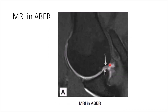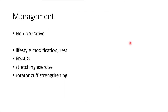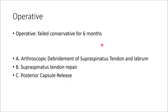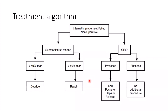Management: non-operative treatment includes activity modification, NSAIDs, and stretching exercises for the posterior capsule, plus rotator cuff strengthening. Operative treatment is indicated when conservative management fails after six months. Surgical options include arthroscopic debridement of the supraspinatus tendon and labrum, supraspinatus tendon repair, and posterior capsule release. The treatment algorithm: if the supraspinatus tendon tear is less than 50%, debridement alone may be performed; if more than 50%, repair is required. If internal rotation deficit is present, add posterior capsule release; if no internal rotation deficit, no additional procedure is needed.